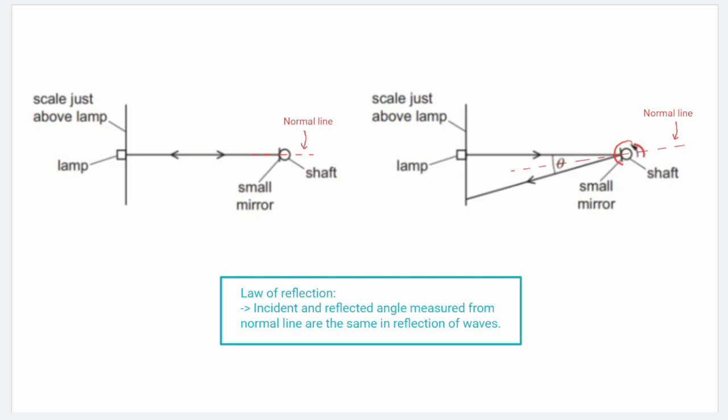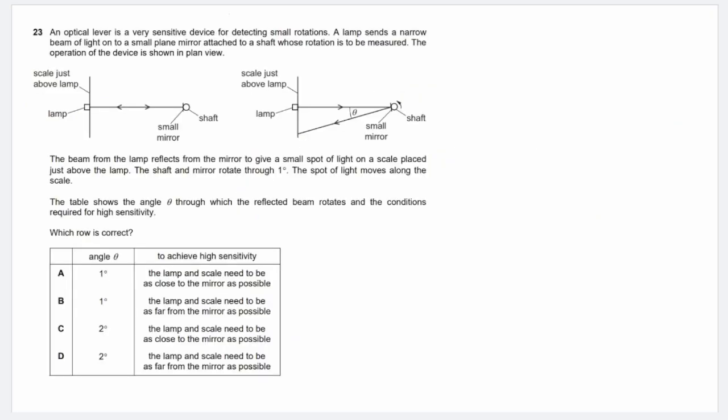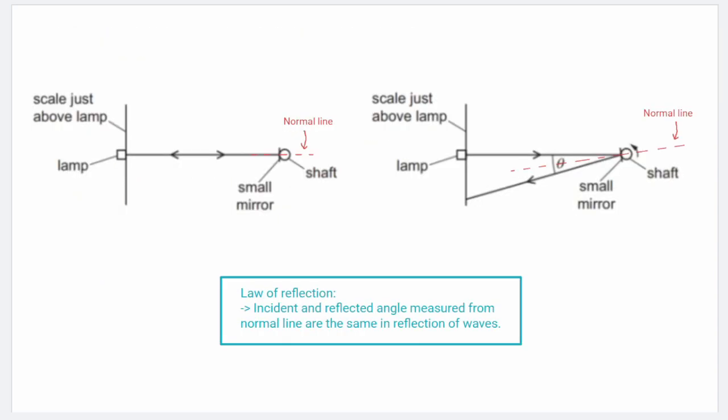Now what happens when the mirror is being rotated? Recall that the normal line is essentially the line that is always perpendicular to the surface of the mirror. So when the mirror is rotated, the normal line is also being rotated. In the question, they mentioned that the shaft and the mirror are rotating through 1 degree. And since the normal line is rotating together with the mirror, we can deduce that the normal line must have rotated through an angle of 1 degree as well. So now as an incident light ray incidents onto the mirror, we can see that there's an incident angle of 1 degree.